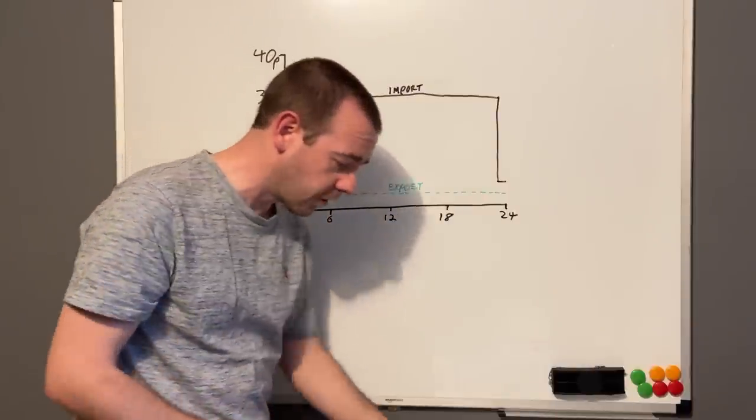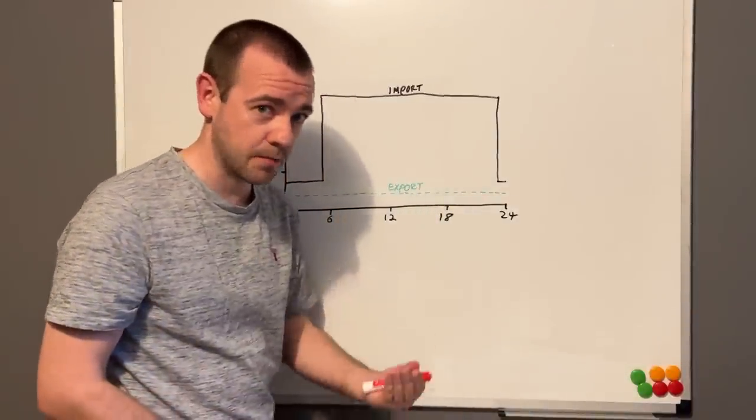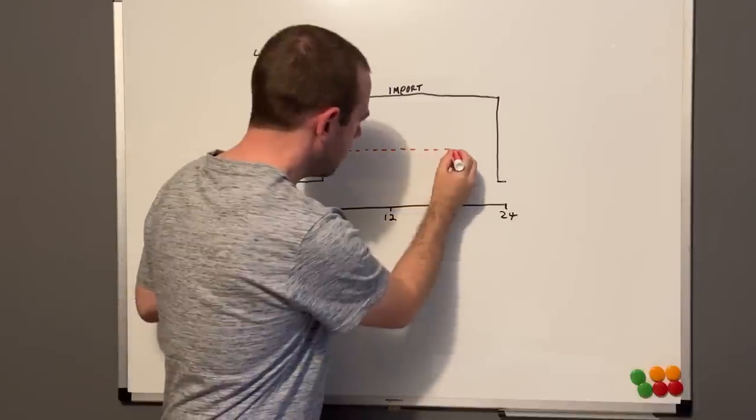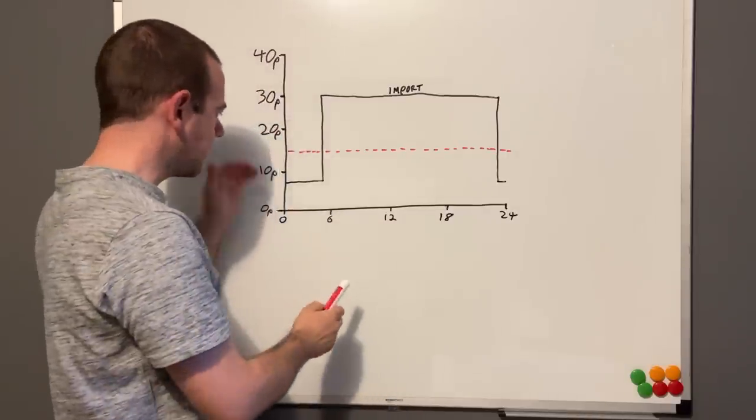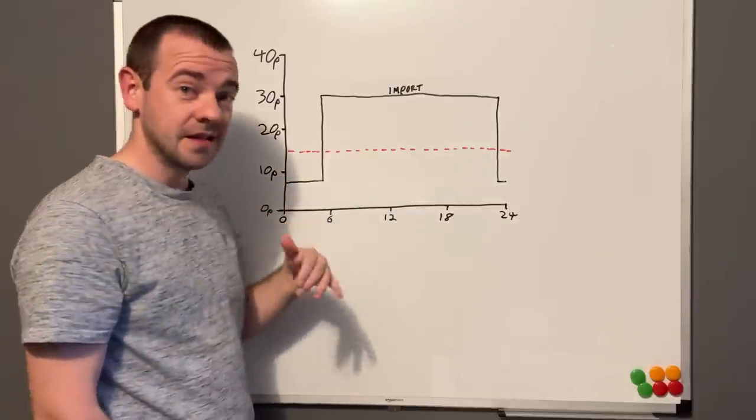And as I said, the export is down here at 4.1 pence-ish wherever I get my electricity from. The import is always more expensive, so that's why exporting has been pointless. But look what happens when I factor in this new tariff, which is no longer 4 pence per kilowatt hour. It's 15 pence per kilowatt hour. That's the export.